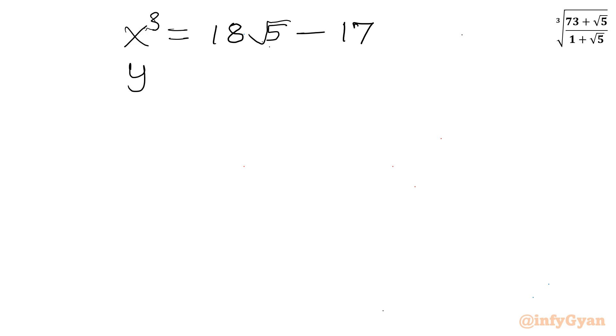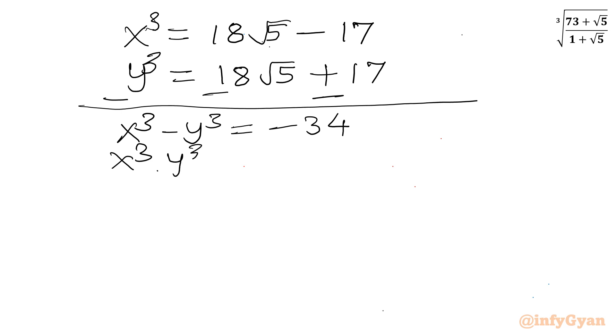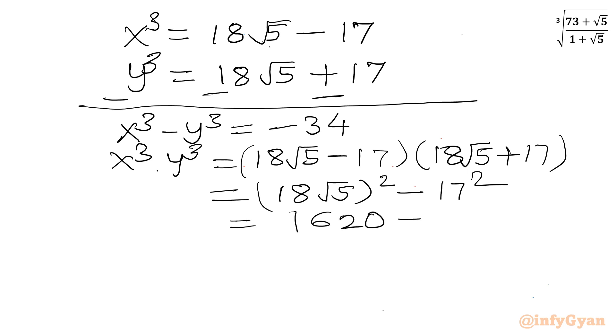Let us consider y cube which will be conjugate of x cube, 18 root 5 plus 17, for finding our x. Now I will take away second equation from first one. So I can write x cube minus y cube. This will be equal to minus 34. And if I will consider product x cube times y cube, we can write 18 root 5 minus 17 times 18 root 5 plus 17.